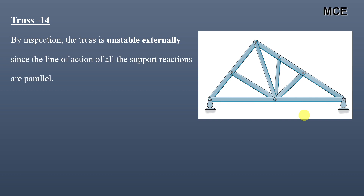For truss fourteen, by inspection we can see that this truss has parallel reactions — both rollers have parallel lines of action. Since the lines of action of the support reactions are parallel, this truss is unstable externally. This is how we find the degree of static indeterminacy of a truss, both external and internal. I hope you enjoyed this video — please subscribe and share if you found it helpful. Thanks for watching!